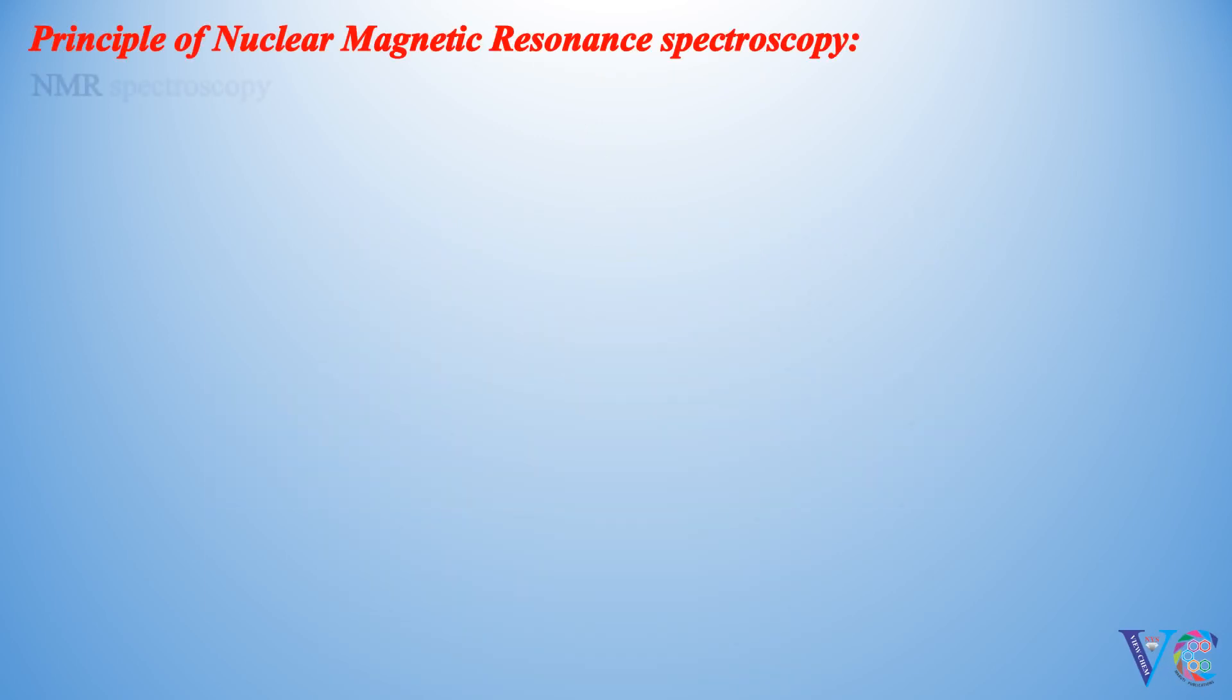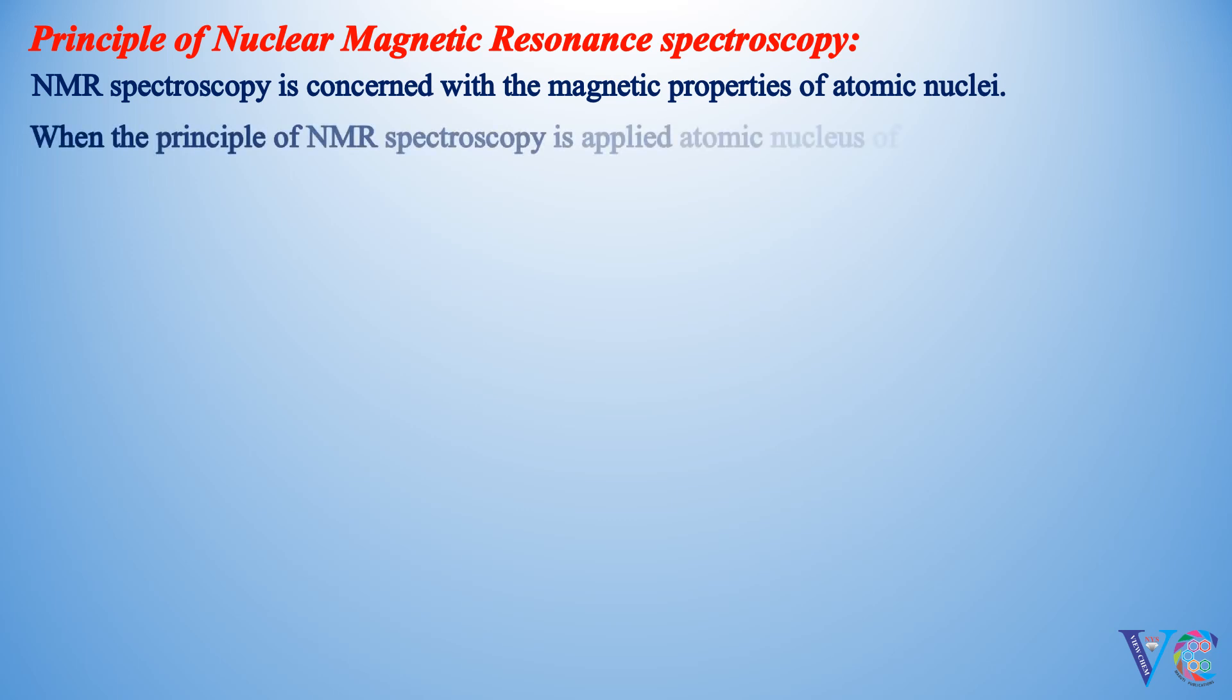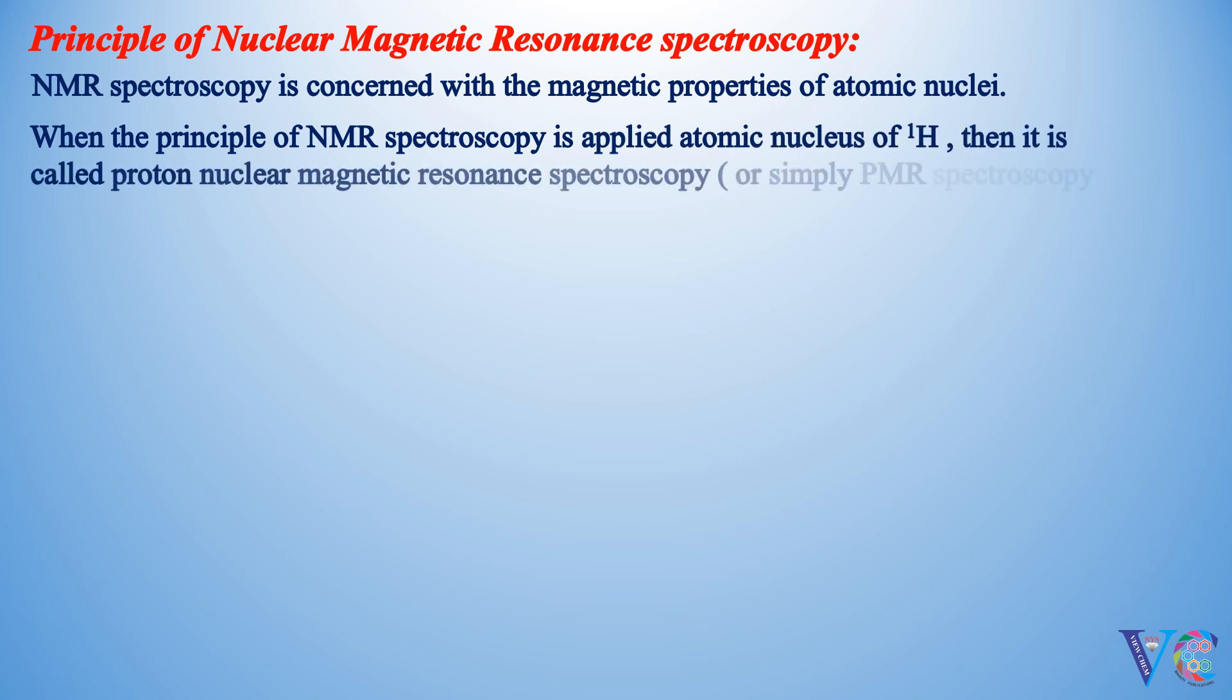NMR Spectroscopy is concerned with the magnetic properties of atomic nuclei. When the principle of NMR Spectroscopy is applied to atomic nucleus of 1H, it is called proton-nuclear magnetic resonance spectroscopy, or simply PMR spectroscopy.